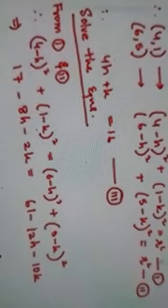17 - 8h - 2k = 61 - 12h - 10k. (a-b)² means a² is 16, plus b² minus 2×4×h. In that way, 1² + k² - 2×1×k. In this way, we have both sides. So many terms have been cancelled out.